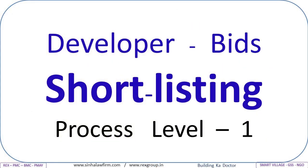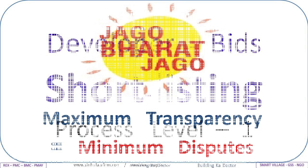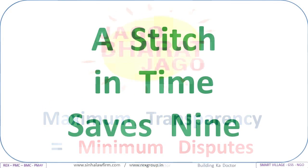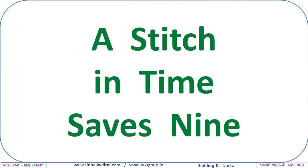This concludes developer bids shortlisting process — Level One. Jago Bharat Jago: maximum transparency equals minimum disputes. A stitch in time saves nine.